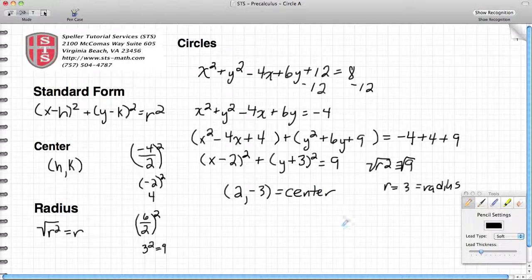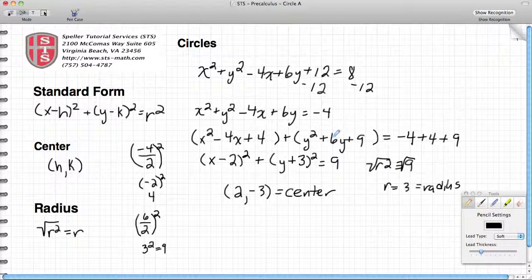So here I have a circle that I started off in a form that was not like the standard form. I converted it to the standard form. I used the method called completing the square so that I'm able to factor my x terms and factor my y terms. Once I did that, I was able to come up with the center (2, -3), and then I took the square root of this constant here to figure out what the radius would be. So again, thank you for tuning in to Speller Tutorial Services. Please take a look at our Facebook page and continue to look at us on our YouTube channel under the same name, Speller Tutorial Services. Thank you.